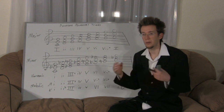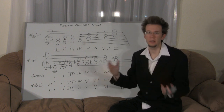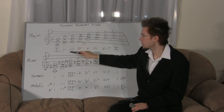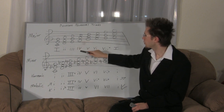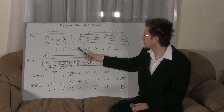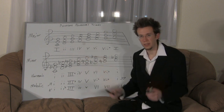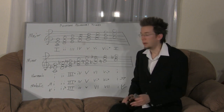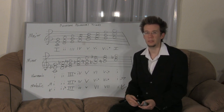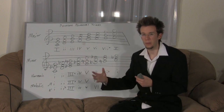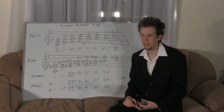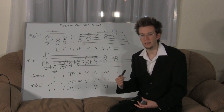This pattern always stays the same because we're always adhering to the key signature. So in any major scale: the one chord is always major, the two chord is always minor, the three chord is always minor, the four chord is always major, the five chord is always major. Memorize this. If something isn't sticking, review it — your brain needs about six exposures before it remembers something permanently.